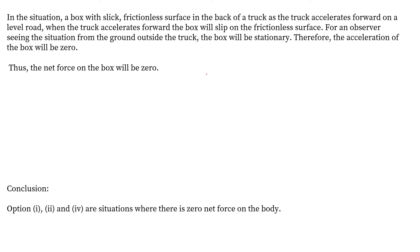In the fourth situation, a box is sitting on a frictionless surface in the back of a truck that is accelerating forward. Because there is no friction between the block and the surface, no force is transmitted to the block. From the ground frame, the block has no net force acting on it, so the net force on the block is zero.